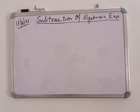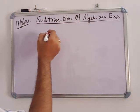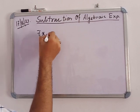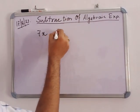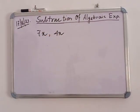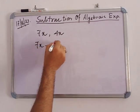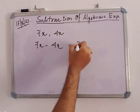Today we are going to discuss the subtraction of algebraic expressions. Subtraction means the normal subtraction with the same variables. For example, if we subtract 7x and 4x, that means 7x minus 4x, which equals 3x.